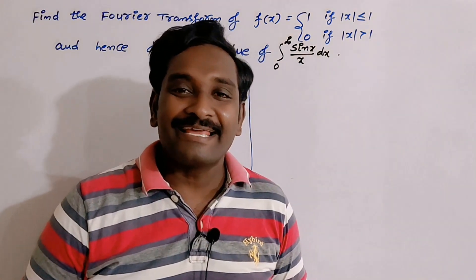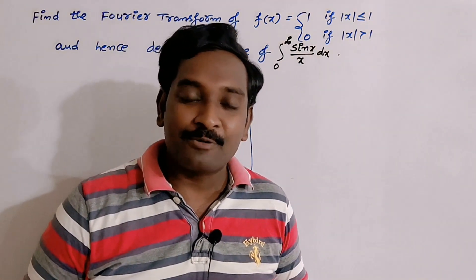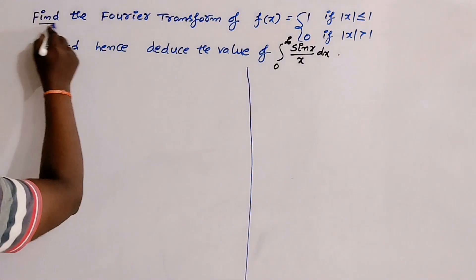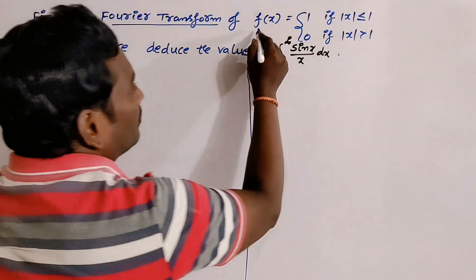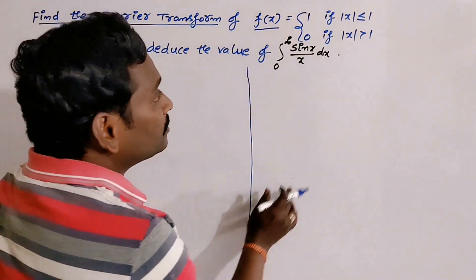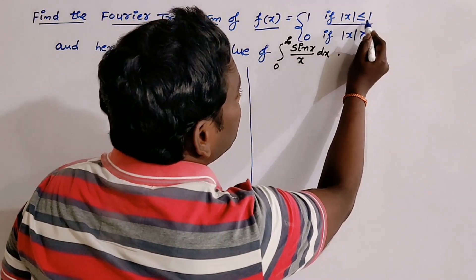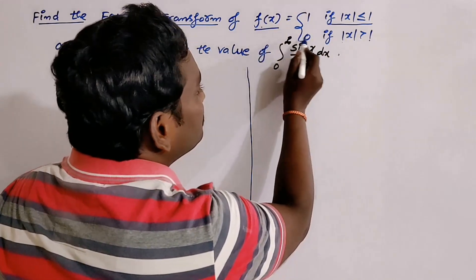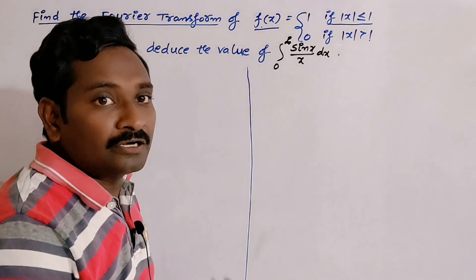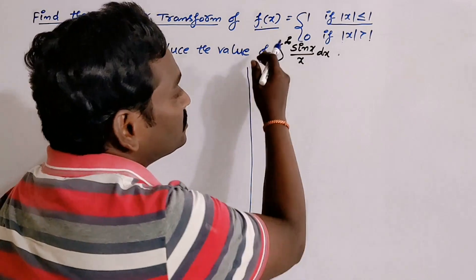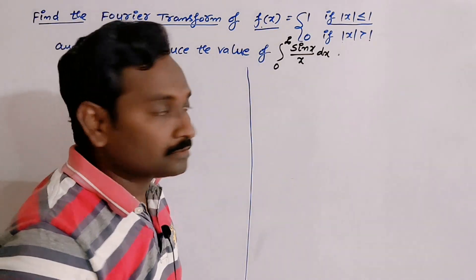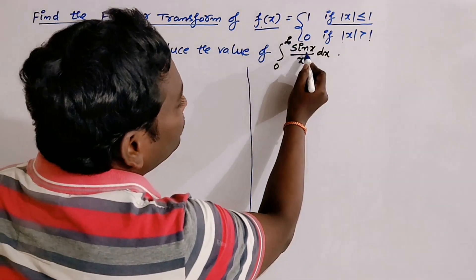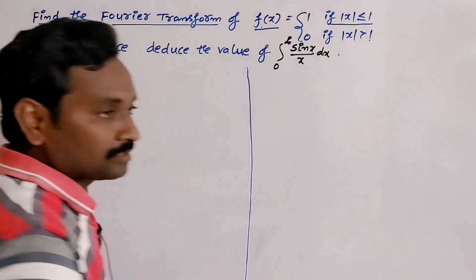Hi everyone, welcome back to our channel. In this video I would like to explain a problem on Fourier transforms. The statement of the given problem: find the Fourier transform of the function f(x) equal to 1 when |x| ≤ 1, and 0 when |x| > 1. This is called a double-valued function, also known as a discontinuous function. We also need to evaluate the integral from 0 to infinity of sin(x)·sin(x)/x dx.